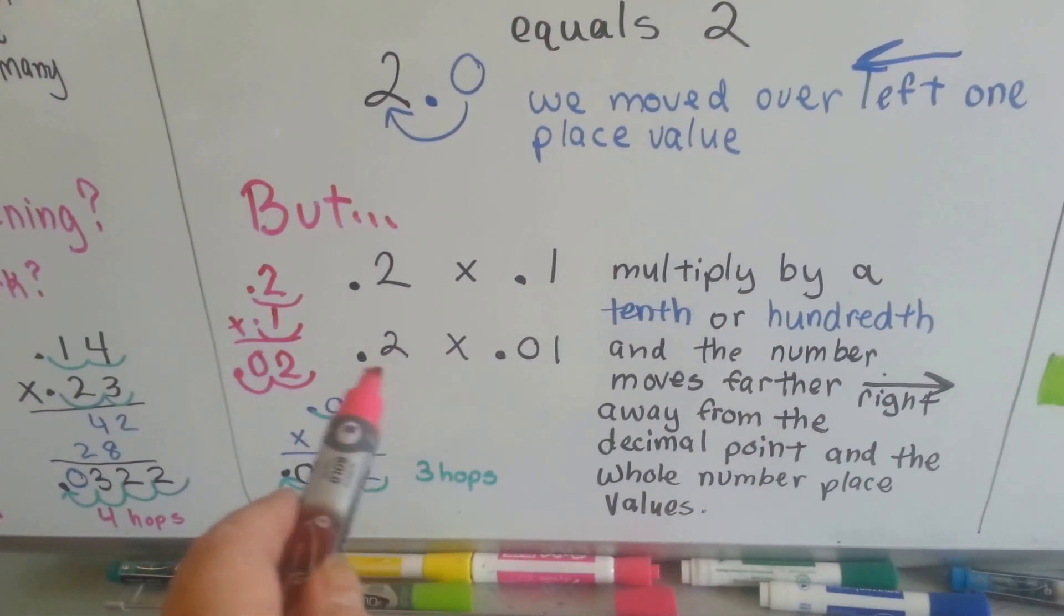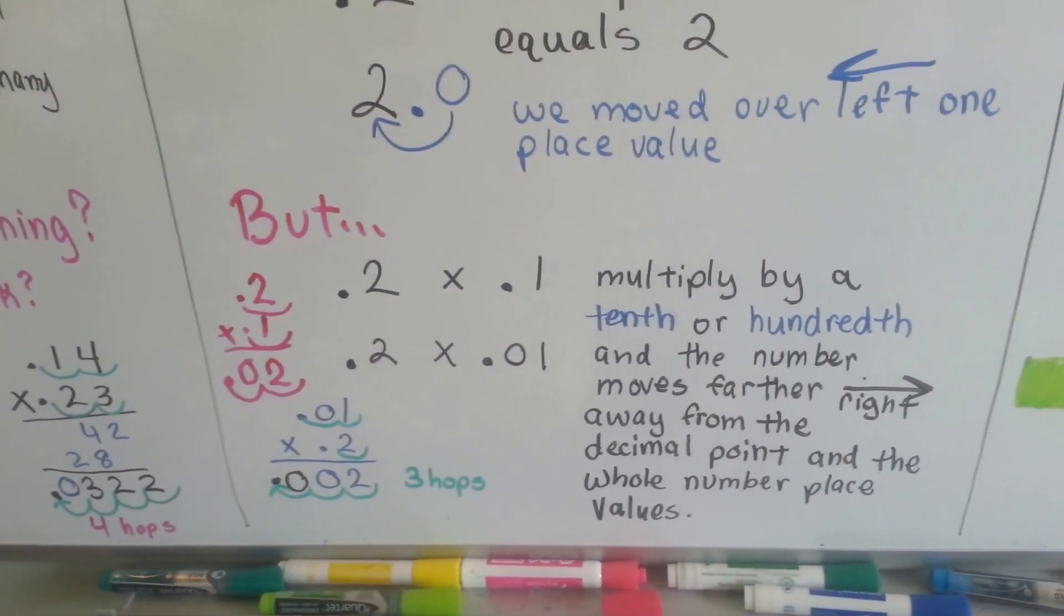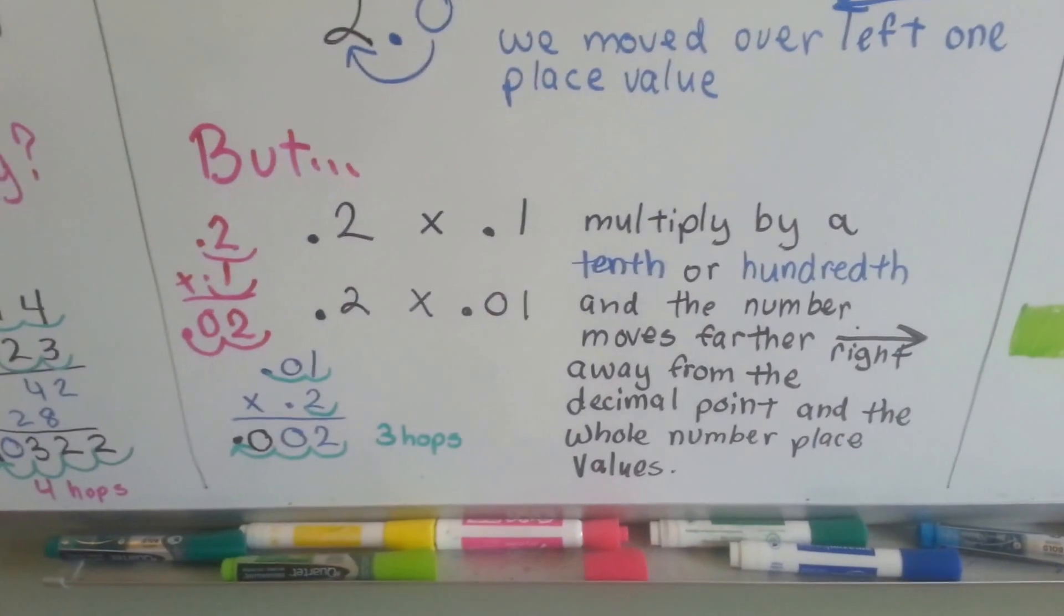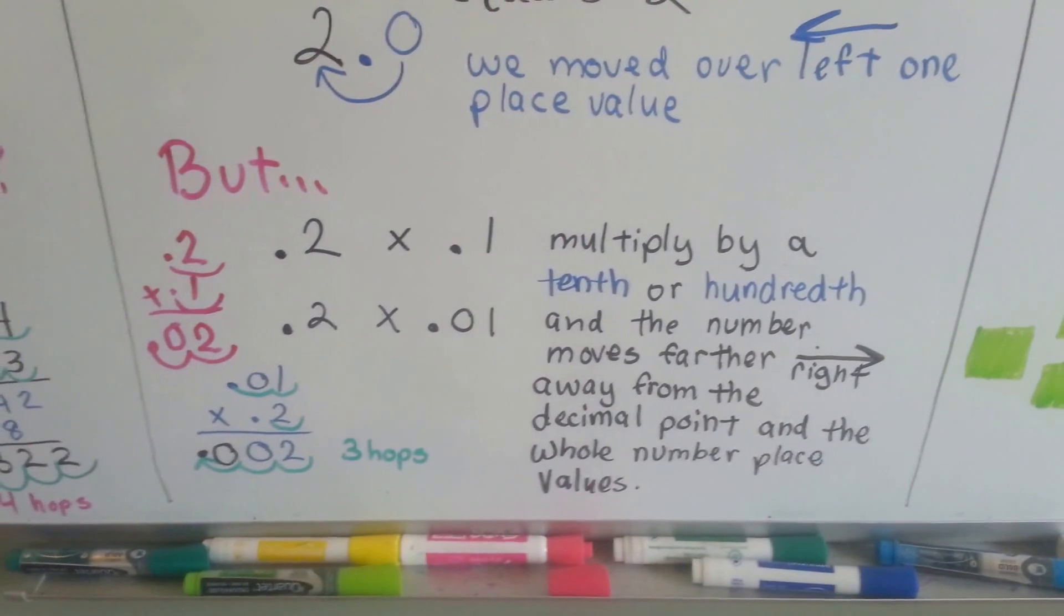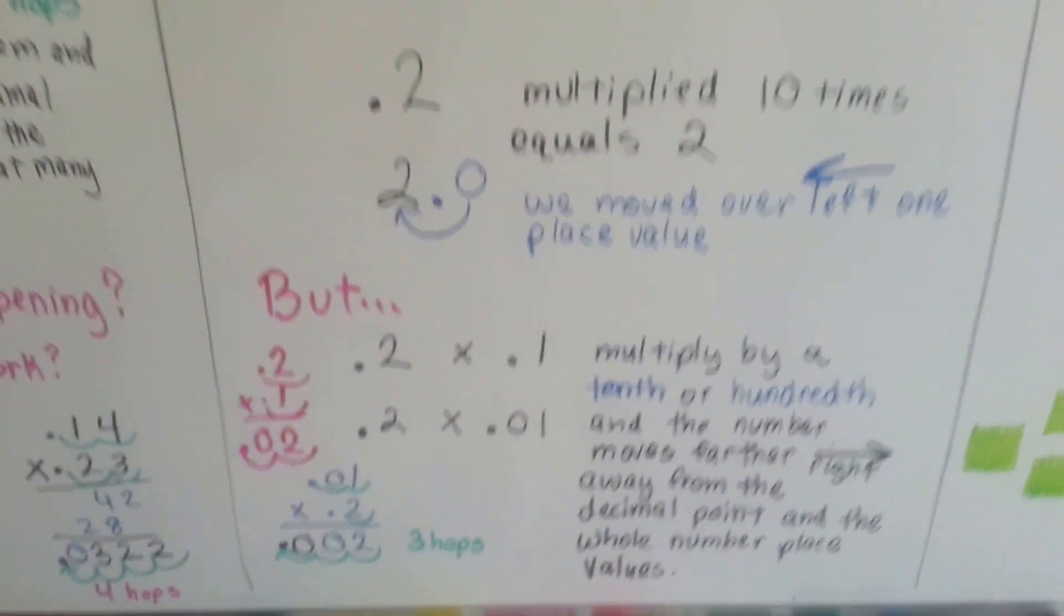In this one, I see 1 hop, 2 hops, 3 hops. There's going to be 3 hops in the answer. That's how we can know where the decimal point is going to be before we even multiply. Before we even start, we know where it's going to go because we can count the hops in the equation and we know that's where it's going to go in the answer.